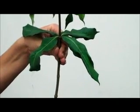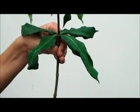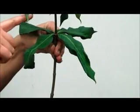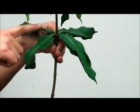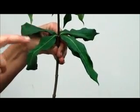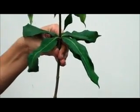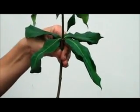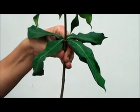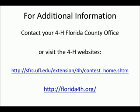If three or more leaves connect to the twig at the same point such that the leaves wrap around the branch, it is called whorled.